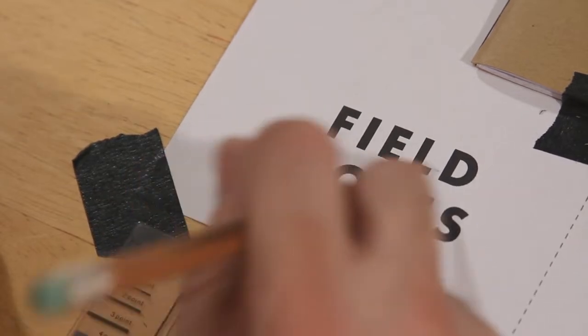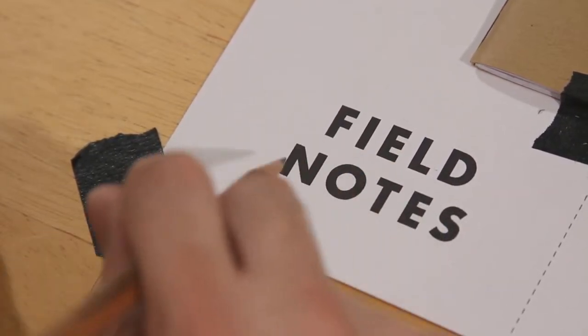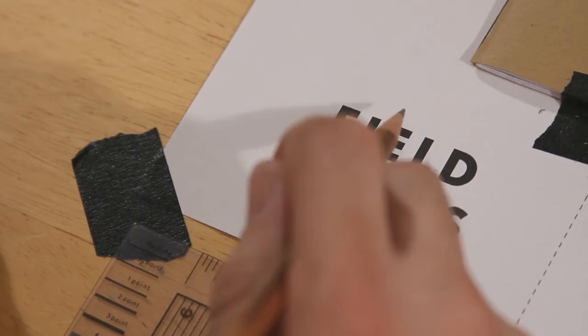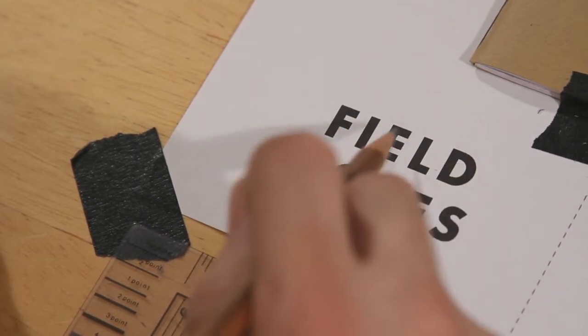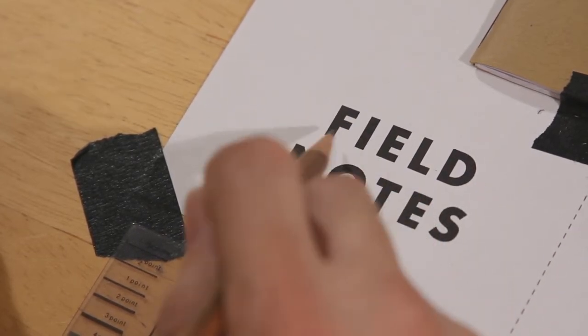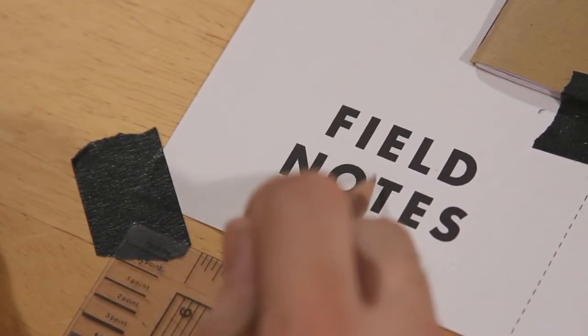Kerning is a little tricky also. Obviously, again, the more skilled you are at typesetting in general, the easier that's going to be for you. In the Field Notes logo, there's a pretty substantial space between all the letters. Obviously, you can do it any way you want, but I'm going to try to follow this.